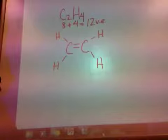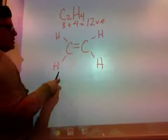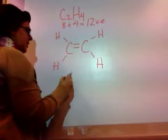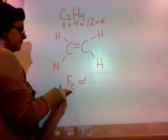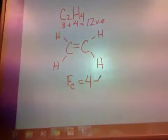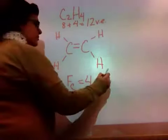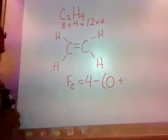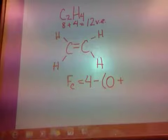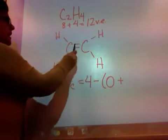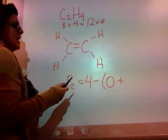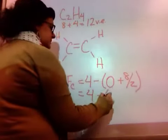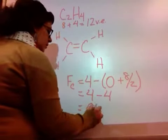Just to be safe, we want to check the formal charge on carbon. Formal charge of carbon: I have 4 valence electrons, and I need the number of electrons acting as lone pairs — I see no lone pairs around carbon, so that's 0. Now, the number of electrons in a bond: I have 4 bonds, each containing 2 electrons, so that's 8 electrons over 2. So if I simplify this: 4 minus 4 equals 0. We are good.